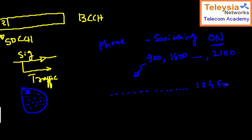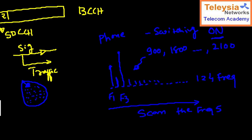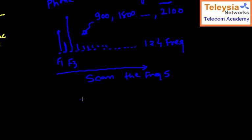We scan all frequencies and see which frequency has the strongest signal. Assume frequency F3 is the strongest, and F2 and F1 are the next strongest. The first thing we do is scan the frequencies, then put them in descending order of signal strength.